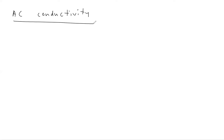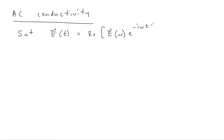Let's start with AC conductivity. We'll go back to our equation of motion and assume that we have a time-varying, harmonic electric field that I can write as the real part of a complex exponential. I'll use E of t to mean the actual time-varying electric field and E of omega to indicate its Fourier component at frequency omega.